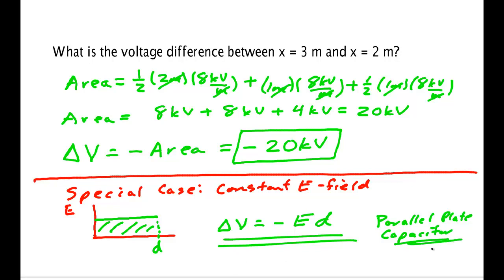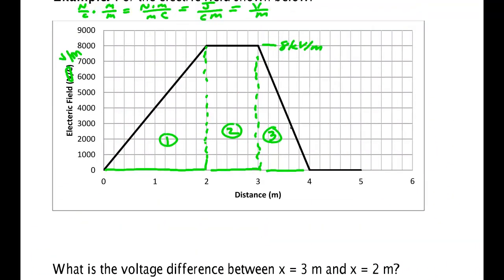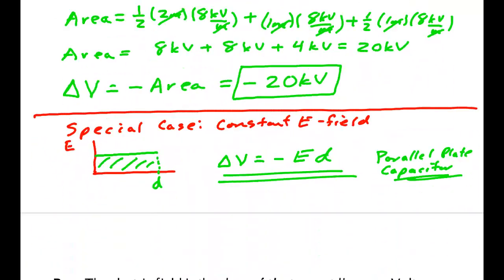Parallel plates produce electric fields that are uniform, assuming the plates are fairly large, which means the electric field is constant — you just have a rectangle. This is simply a special case formula. In general, the solution is to get a plot of the field, whatever shape it is, and find the area under the curve. If the curve is some curved shape, you set up lots of little rectangles or triangles. With modern spreadsheets and computers it's easy to approximate because they can add up many small rectangles, allowing us to work very complicated shapes to design new products.